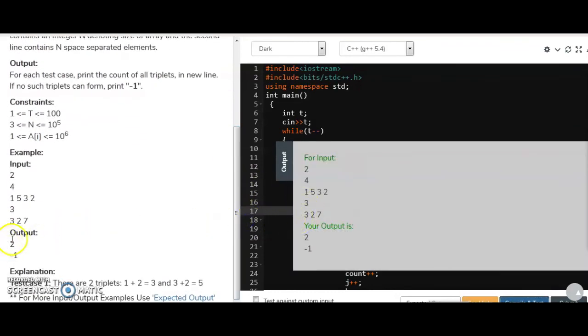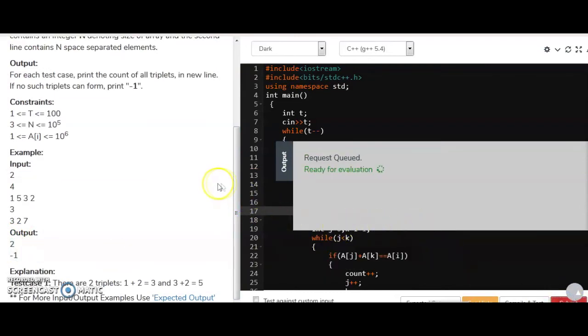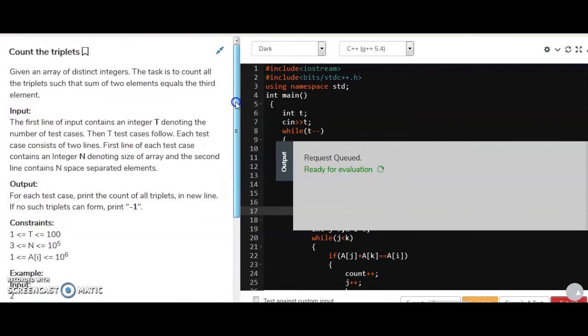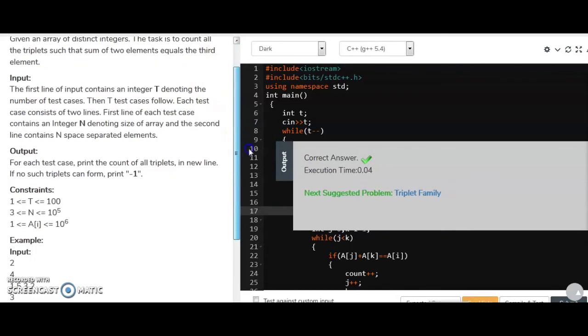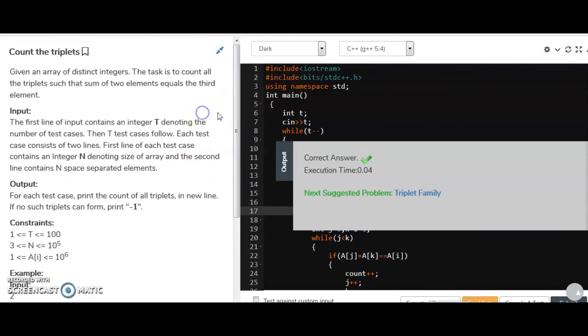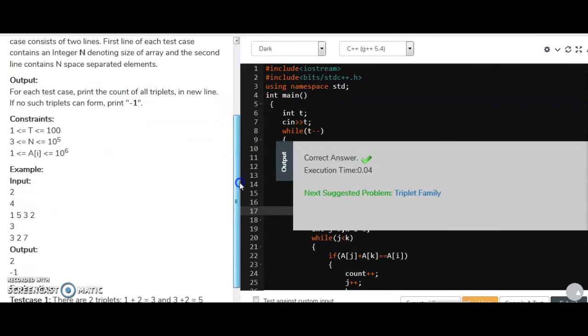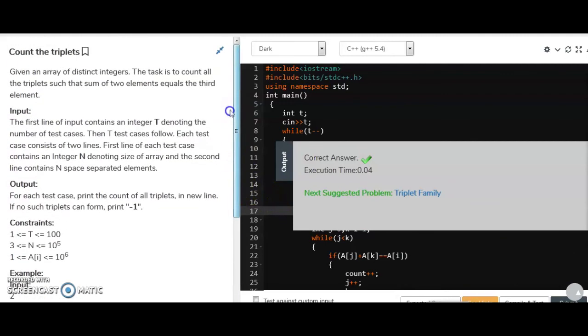So yes, we are getting the same output as 2 minus 1 here. So let's submit it to check for the further test cases. They are passing or not. Count the triplets. Yes, we have passed all the test cases and it's 0.04 time taken. And I think this is a very good question that is asked in the interview. So if you like this video, you can share it with your friends. Subscribe to my channel and also click on the bell icon so that you will get the notification of my next video. See you. Bye-bye.